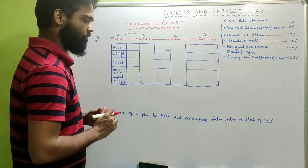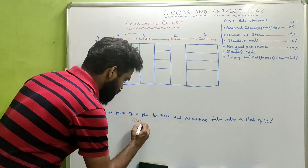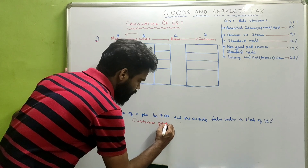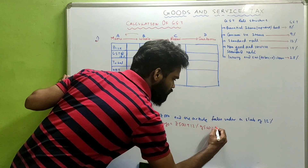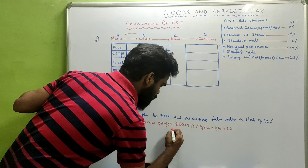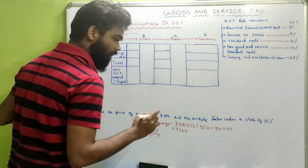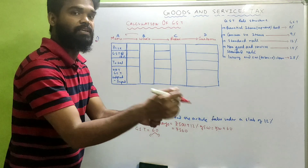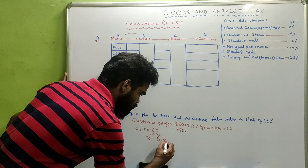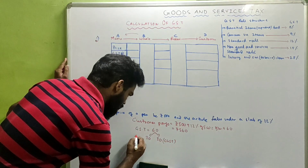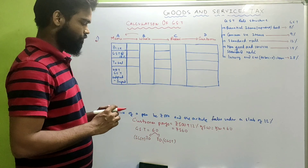Suppose the price of a pen is ₹500 and the article falls under the 12% slab. The customer pays ₹500 plus 12% of ₹500, which is ₹60, making the total ₹560. The GST collected is ₹60. Since this is an intra-state sale, this ₹60 is divided equally: ₹30 goes to the central government as CGST and ₹30 goes to the state government as SGST.